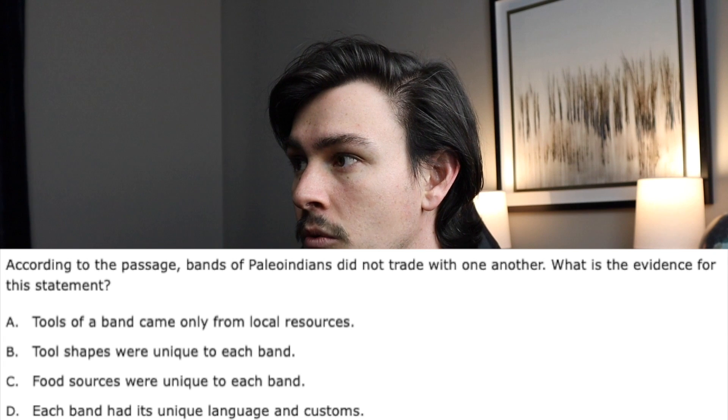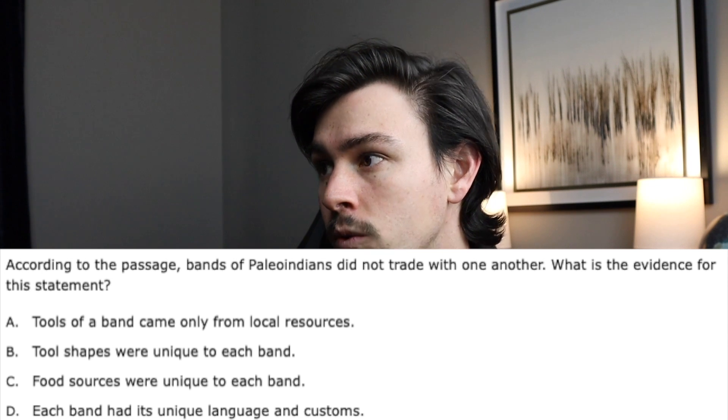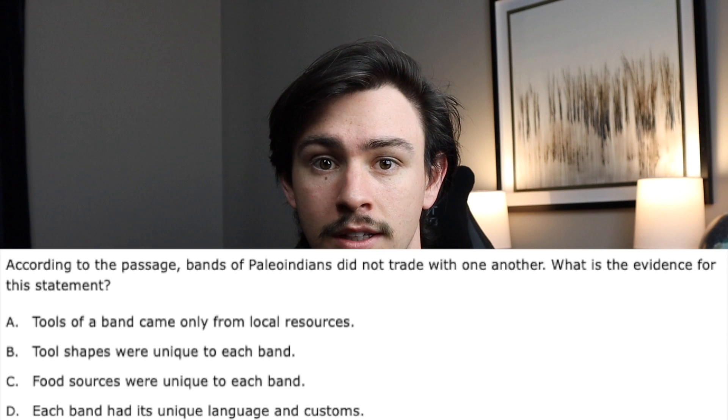The second question says: 'According to the passage, bands of Paleo-Indians did not trade with one another. What is the evidence for this statement?' Answer choice A says 'tools of a band came only from local resources.' Notice that you still have a strong quantifier — 'only' — however the correct answer for this question is A. This goes to show you that absolute answer choices do not completely disqualify a choice from being correct, but it does raise the burden of proof. You would need very strong evidence in the passage to support an answer choice that has a word like 'only,' 'never,' or 'always.' So in general, if you see one of those strong qualifiers, be very cautious — they're usually not correct.